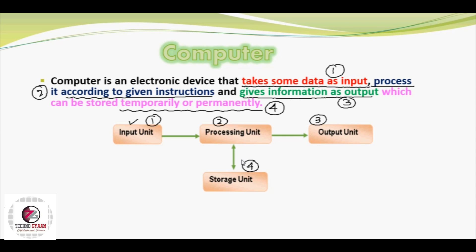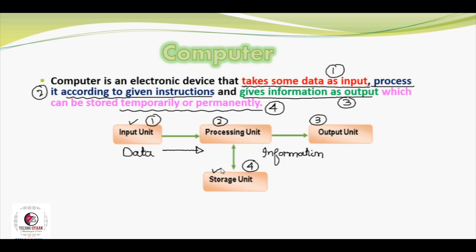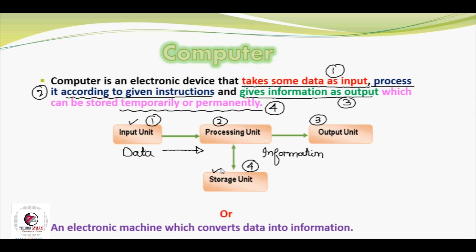The very first unit's job is to take data as input. This data is given to the processing unit, which performs processing according to given instructions and converts this data into information, which we call output. This information can be stored in the storage unit on a temporary or permanent basis for future use. So this is our modular definition of computer, and in the simplest way we can say: computer is an electronic machine which converts data into information. Any machine that converts data into information is called a computer.